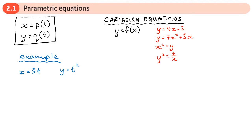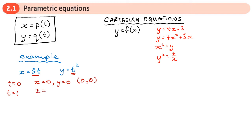So for example, when t is 0, we will get the coordinate x equals 0, y equals 0, because you just do 3 times 0 and 0 squared. So you'll get the coordinate (0, 0), which you can plot. Let's choose another value for t — let's say t is 1. If t is 1, for our x coordinate we'd get 3 times 1, so x would be 3. The y coordinate would be 1 squared, so y would equal 1. So then we would plot that coordinate.